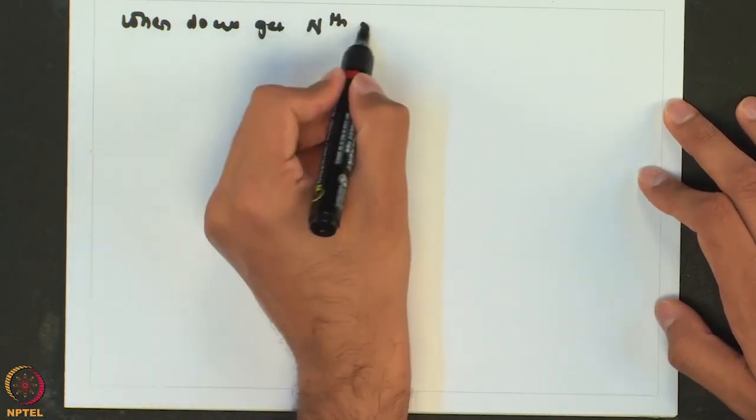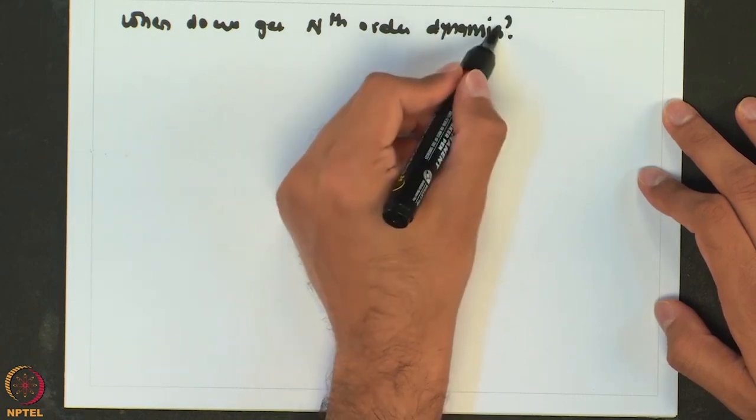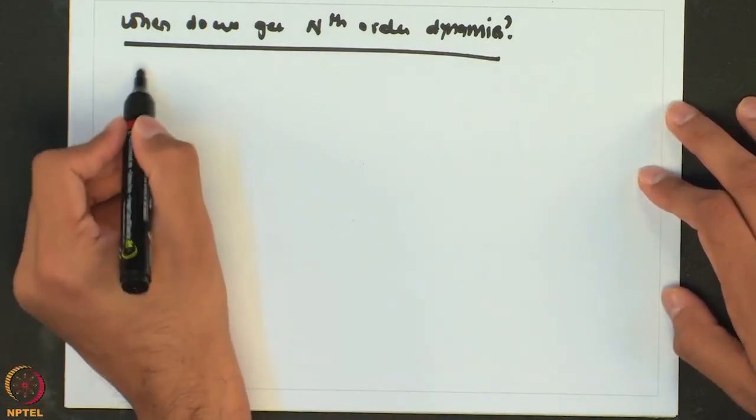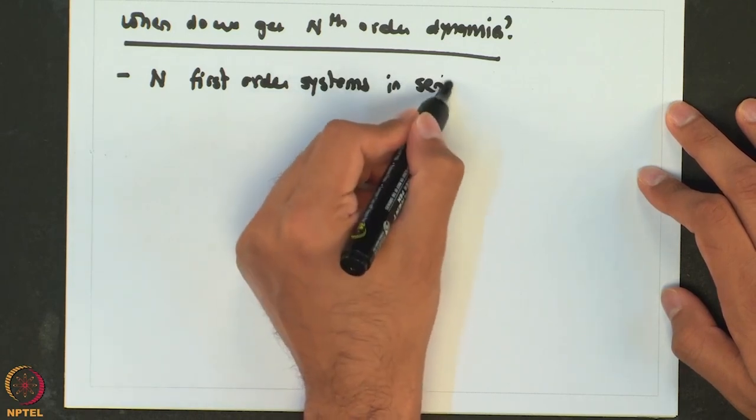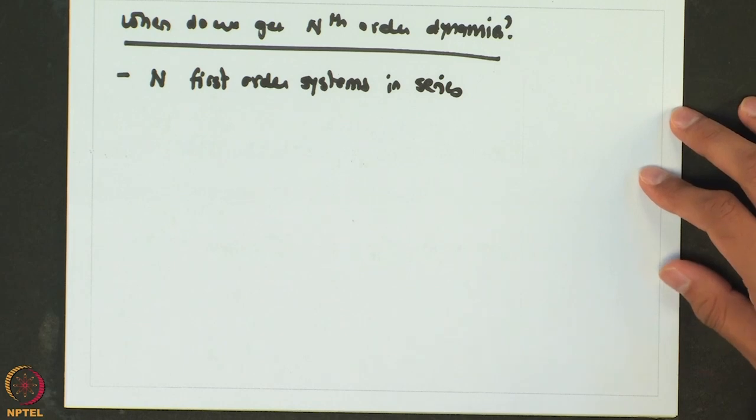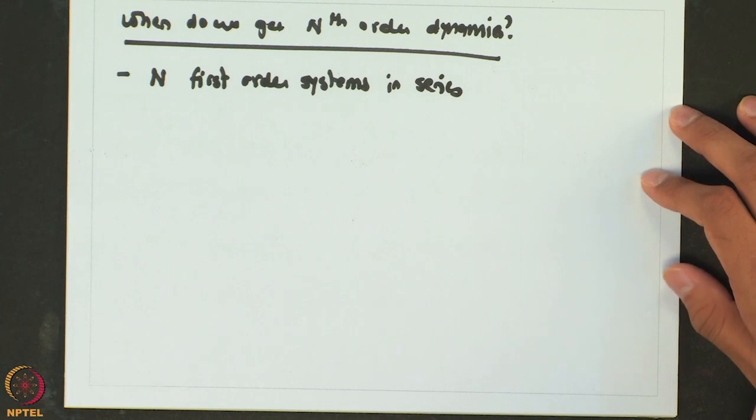Let us now look at whether higher order systems are common in chemical engineering, and when do we get a higher order response. The answer lies as an extension of a second order system. We had seen that a second order system is most often a series combination of two first order systems. So, when do we get nth order dynamics? The most common place is when we have n first order systems in series, and as it turns out this is quite a common phenomenon in chemical engineering.